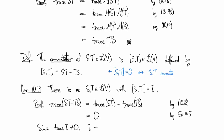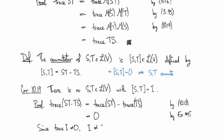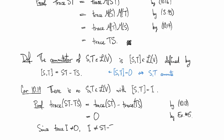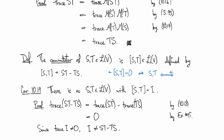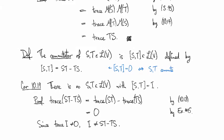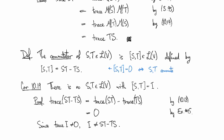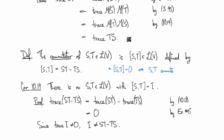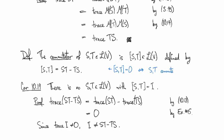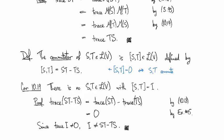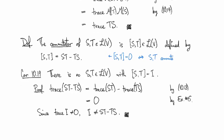And so then the simple observation is that since the trace of the identity is not zero, then there's no way that these things can be the same operator. Two operators with different traces cannot be the same. Two operators with the same traces may or may not be the same, but if they have different traces, they can't be the same. So that was it, pretty simple.